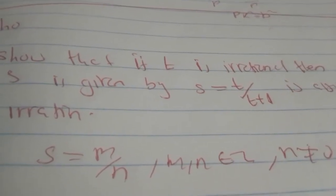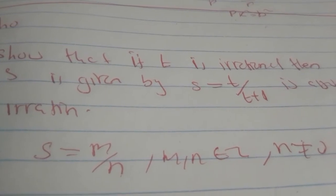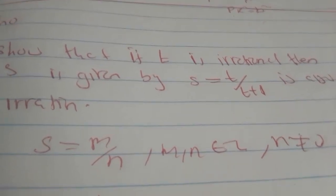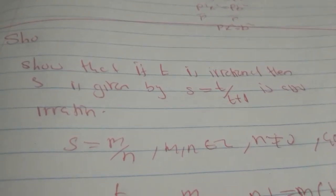We can show that if t is irrational, then the number s given by s equal to t over t plus one is also irrational. We are going to assume to the contrary that s is rational.